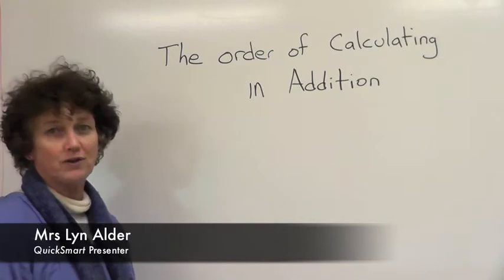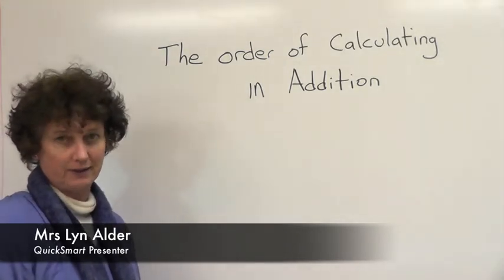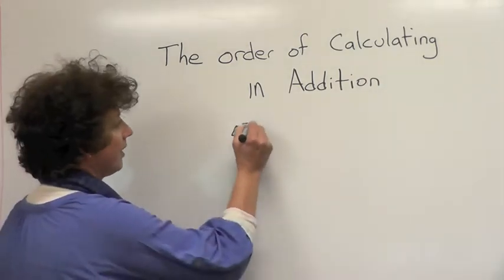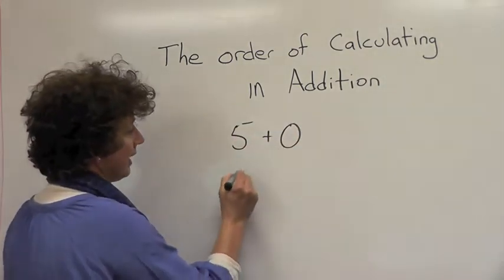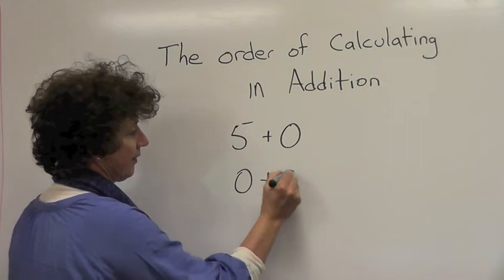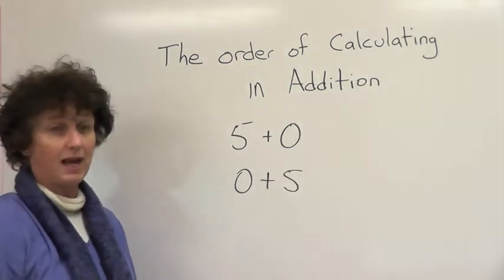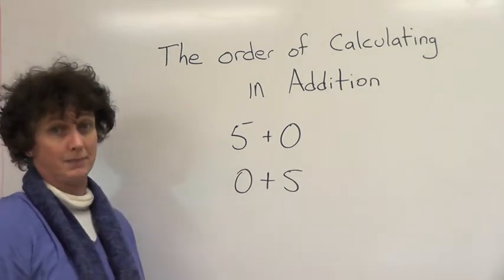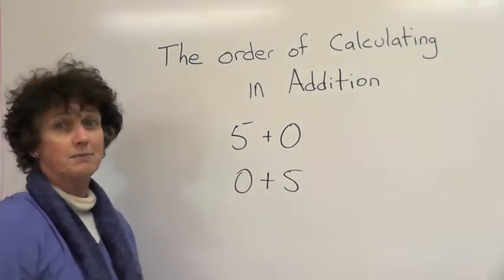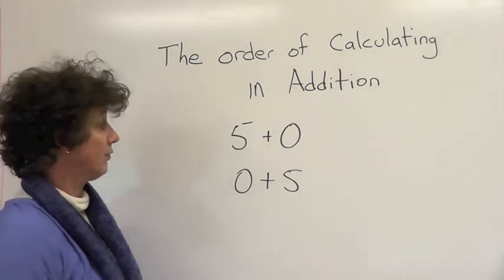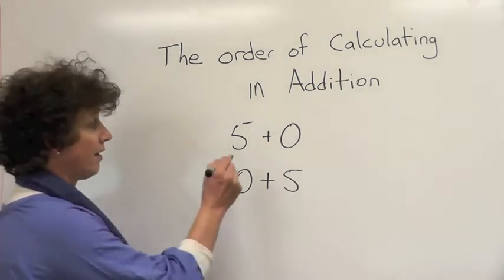Today we're going to look at the order of calculating in addition. Let's take a look at two sums: five plus zero and zero plus five. In addition, when we're having to add two or more numbers, it really doesn't matter what order we add the sums up.